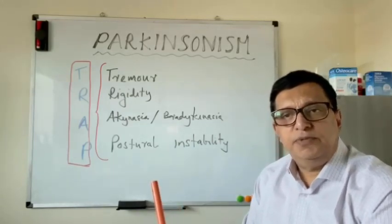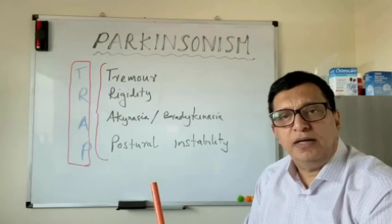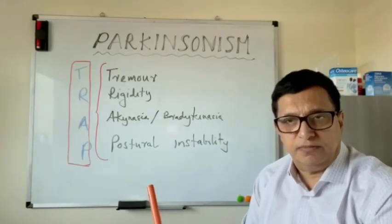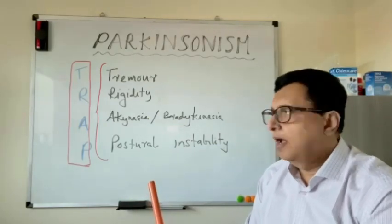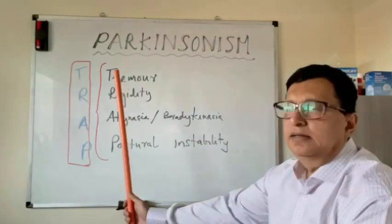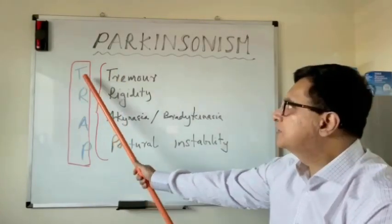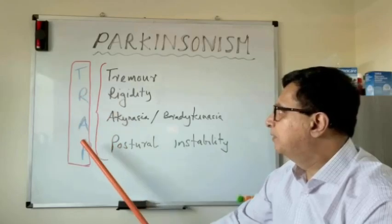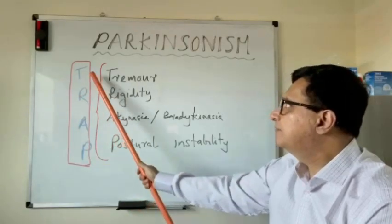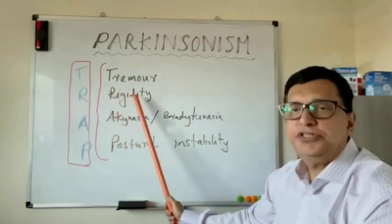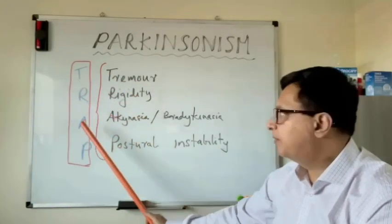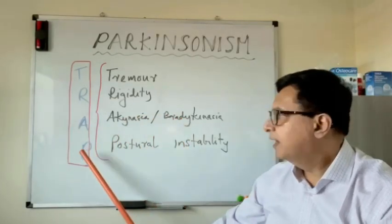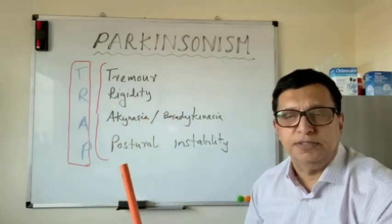Mostly the symptoms of Parkinsonism are initiated with motor symptoms, and we can explain the major symptoms with the acronym TRAP: Tremor, Rigidity, Bradykinesia, and Postural Instability.